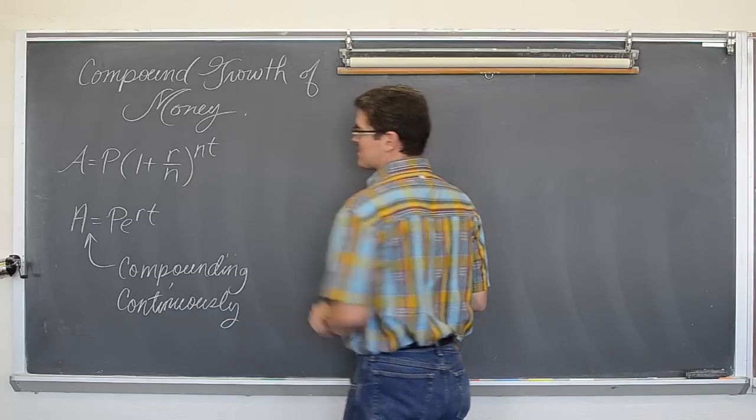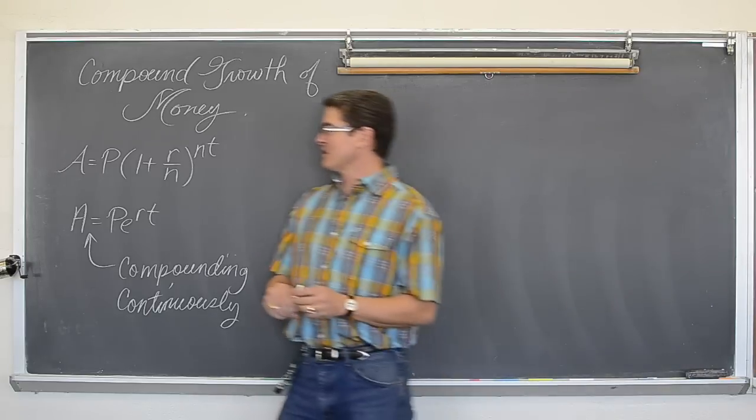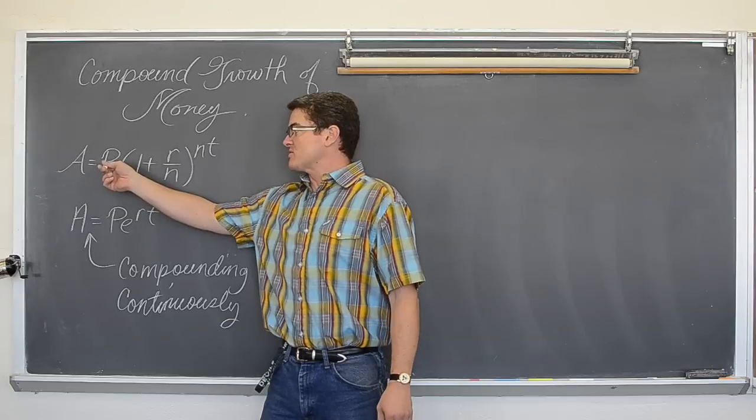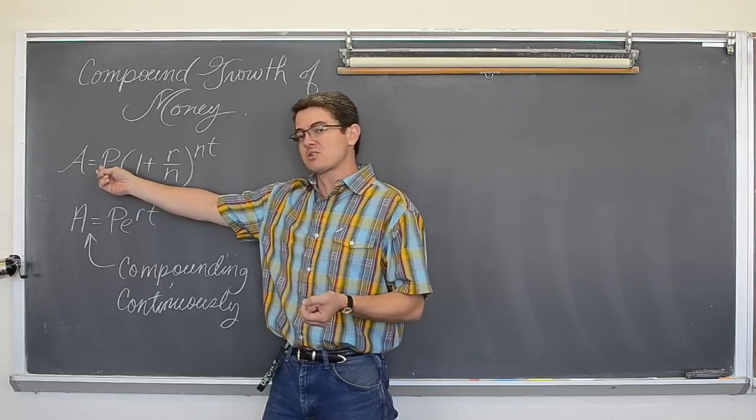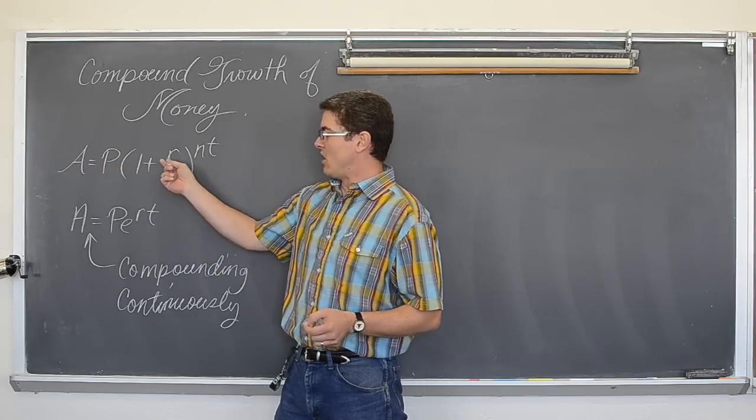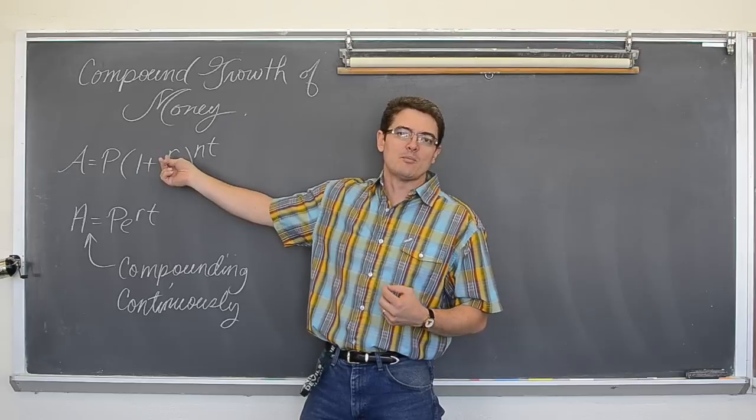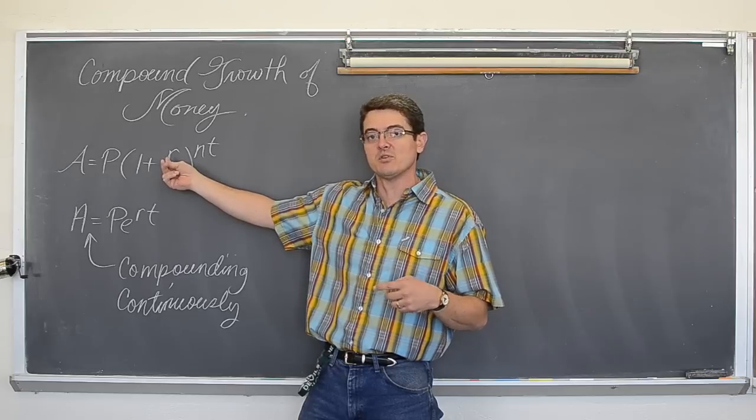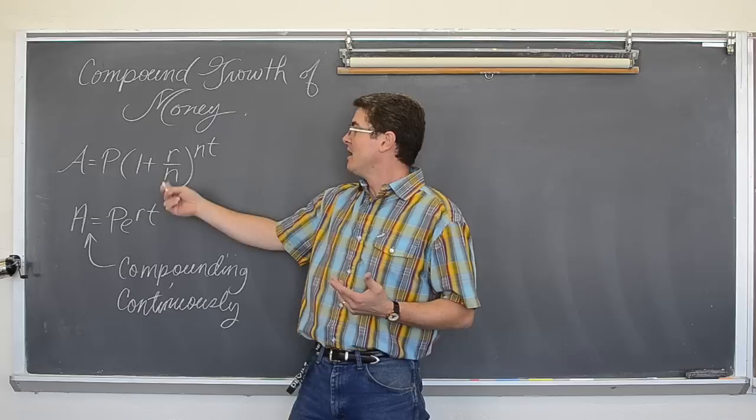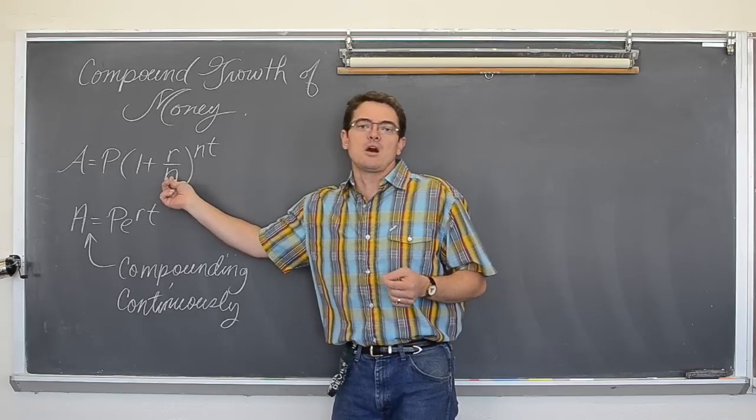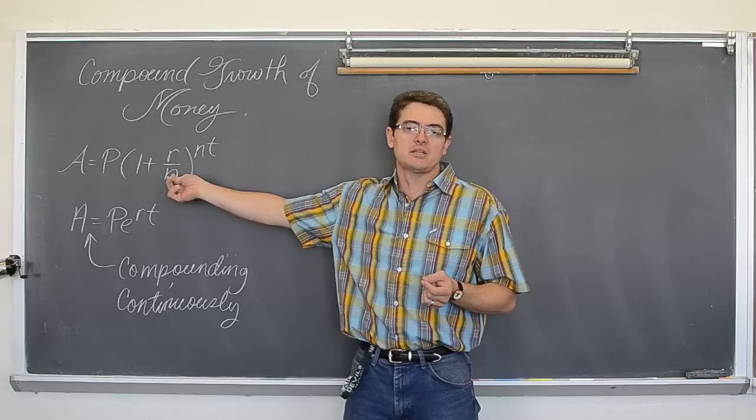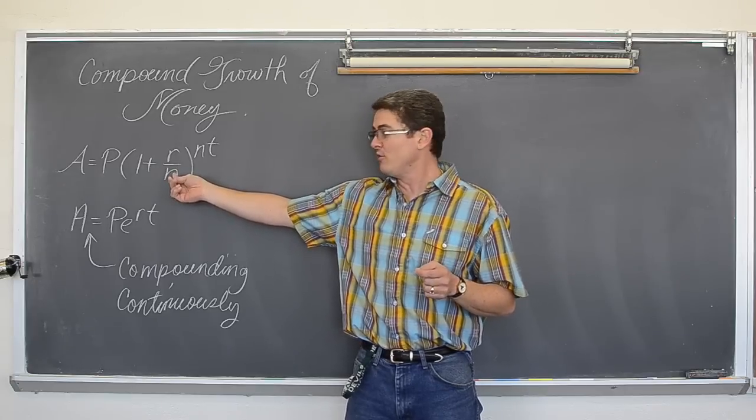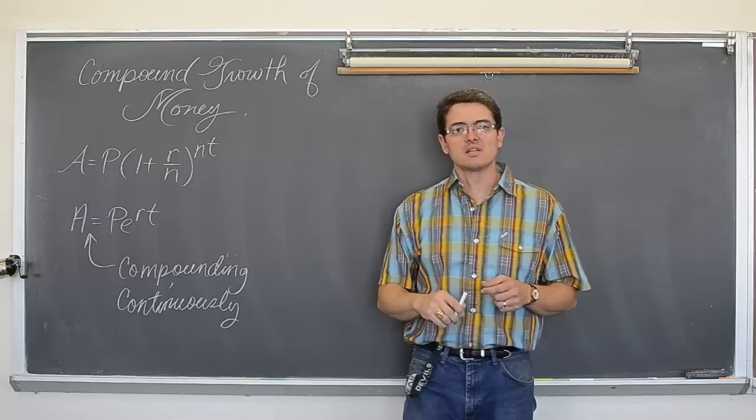So compound growth and sometimes with the economy it feels like decay, but compound growth formulas as far as money are concerned, the two that we have that we are going to deal with today is our final amount of our investment is equal to P which is principal, that is the starting value, times one plus r, that is going to be an interest rate. We almost always work with interest rates in terms of, or percents in terms of a decimal, so like five percent would be .05. n is the number of compounding periods. The examples I am going to take a look at today are going to be compounded monthly like most bank accounts are. So n is going to be equal to twelve, and t is the number of years.